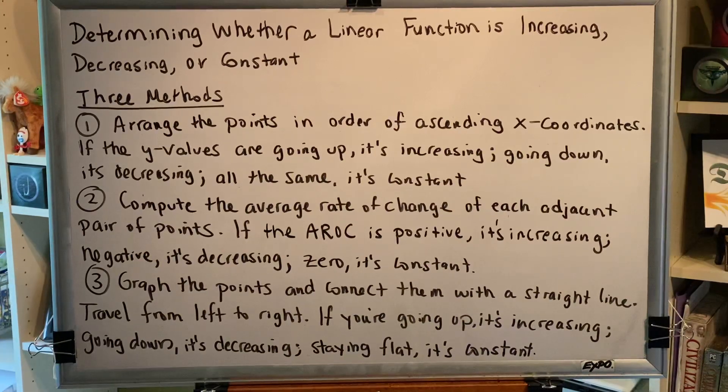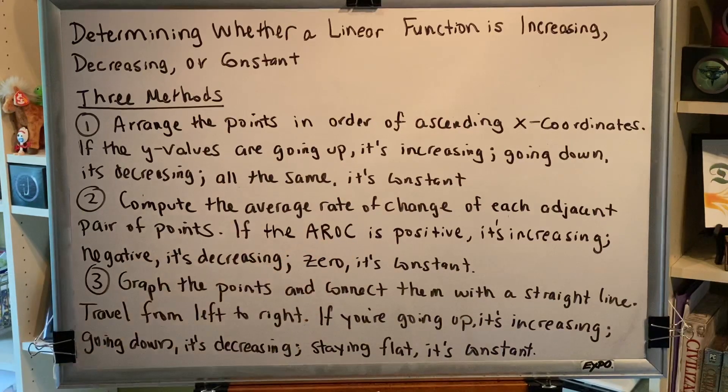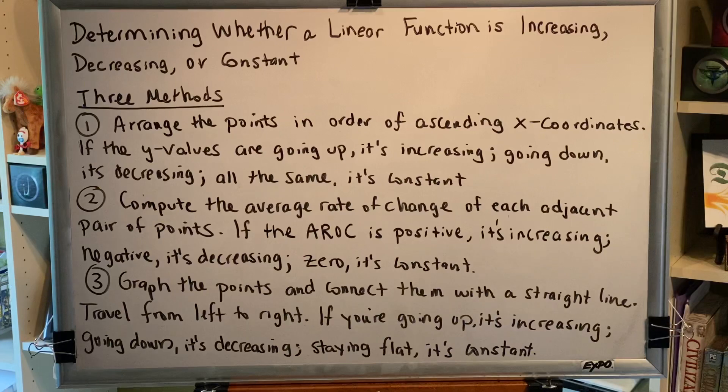Method 2: Compute the average rate of change of each adjacent pair of points. If the average rate of change is positive, it's increasing. Negative, it's decreasing. Zero, it's constant.